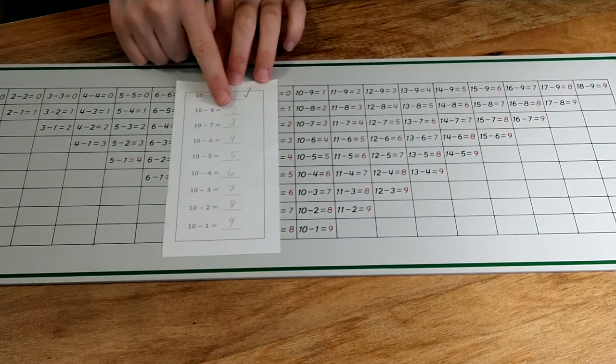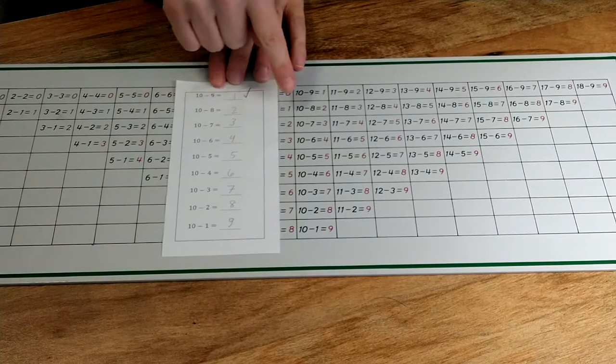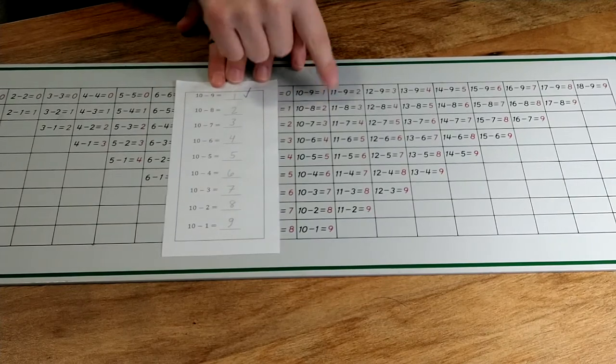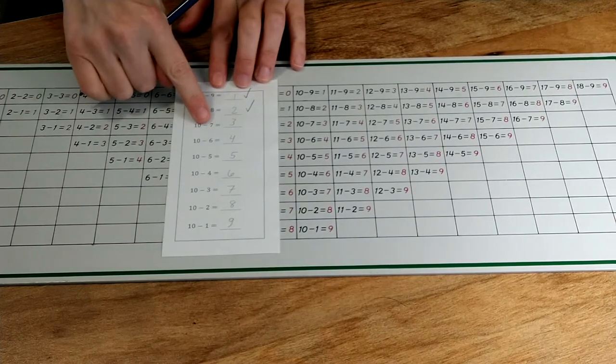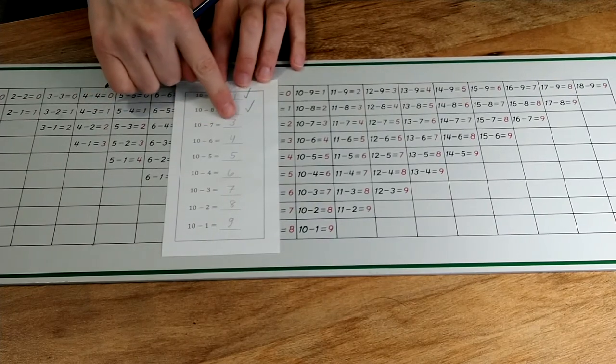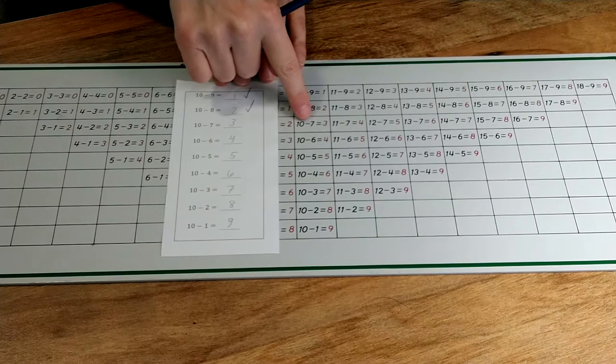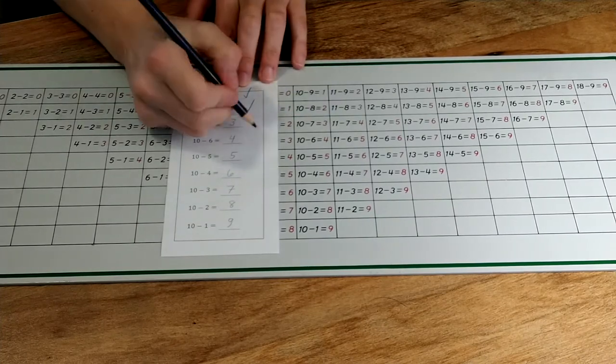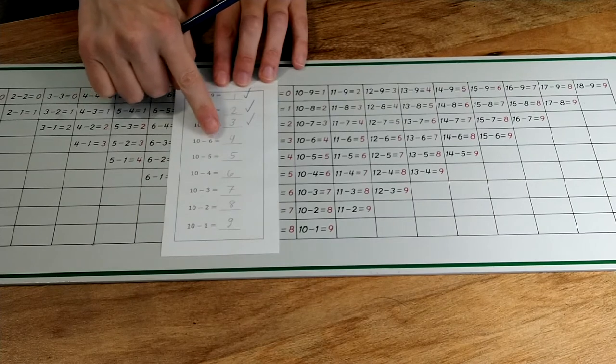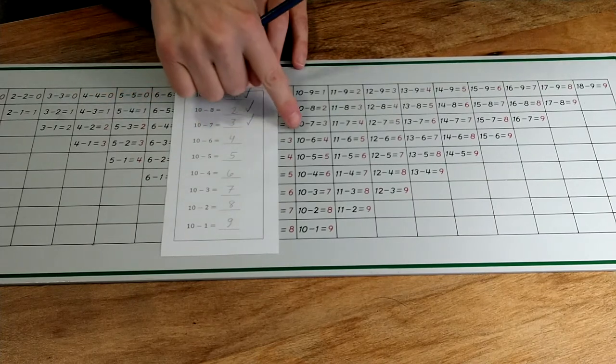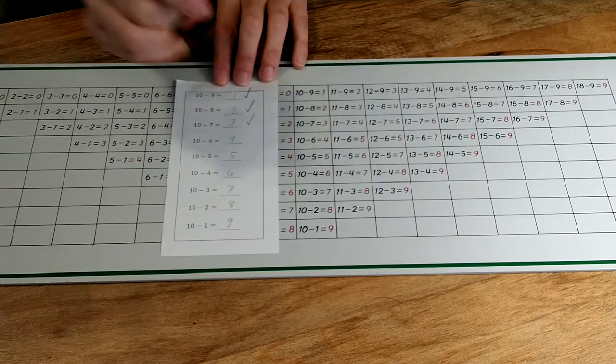Ten minus eight equals two. Ten minus eight equals two. Ten minus seven equals three. Ten minus seven equals three. Ten minus six equals four. Ten minus six equals four.